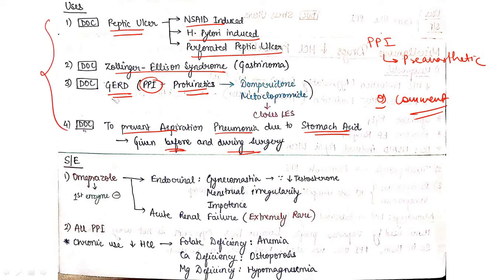Now come to the side effects of PPI. First, omeprazole is an enzyme inhibitor. It will cause gynecomastia, menstrual irregularity, impotency, and also it may lead to acute renal failure. But this side effect is extremely rare. This acute renal failure is extremely rare, but it may cause these side effects that are specifically associated with omeprazole.